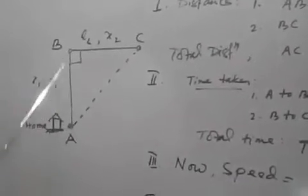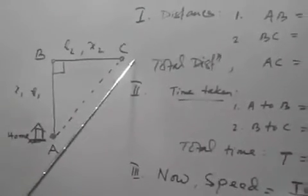In this case, A is the initial position, B is the intermediate point, and C is the final position.